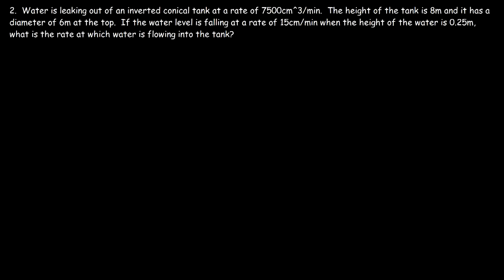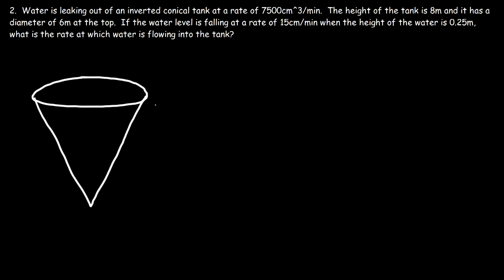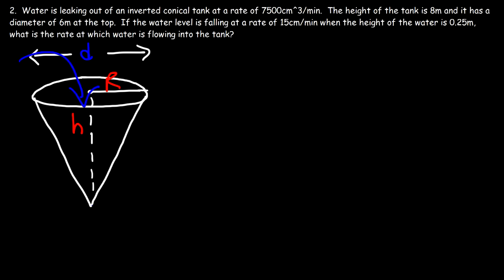Now let's work on another problem. Water is leaking out of an inverted conical tank at a rate of 7500 cubic centimeters per minute. The height of the tank is 8 meters and it has a diameter of 6 meters at the top. The water level is falling at 15 centimeters per minute when the height of the water is 0.25 meters. We need to find the rate at which water is flowing into the tank, taking into account that water is both flowing in and leaking out.